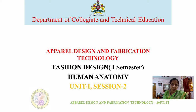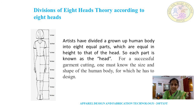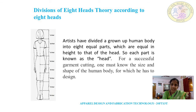Let us proceed further in this session. Now we will see the divisions of the 8 heads theory according to our height. In the last class I have already told you that human height is calculated in 7 and a half heads. For easy calculation it has been considered as 8 heads. Artists have divided a grown-up human body into 8 equal parts which are equal in height to that of our head.